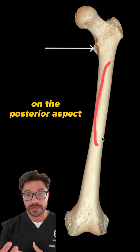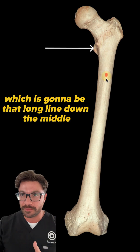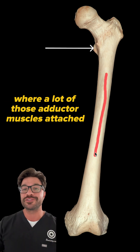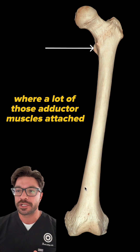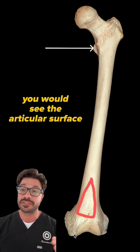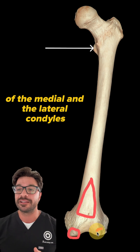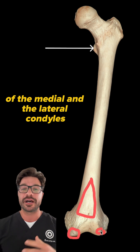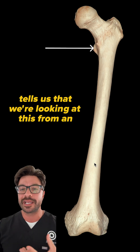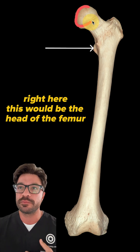On the posterior aspect, remember we have the linea aspera, which is that long line down the middle where a lot of those adductor muscles attach. You would also see more of a popliteal surface, and you would see the articular surface of the medial and lateral condyles. The fact that we don't see those tells us we're looking at this from an anterior perspective.